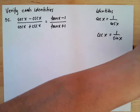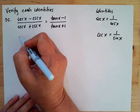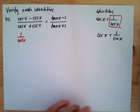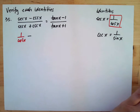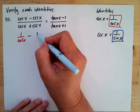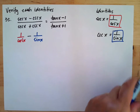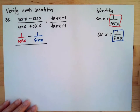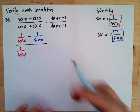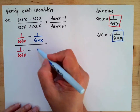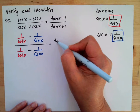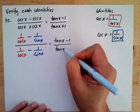We will replace sec x with 1 over cosine x and csc x with 1 over sine x. So the left side becomes: (1 over cosine x minus 1 over sine x) over (1 over cosine x plus 1 over sine x), and this should equal (tan x minus 1) over (tan x plus 1).